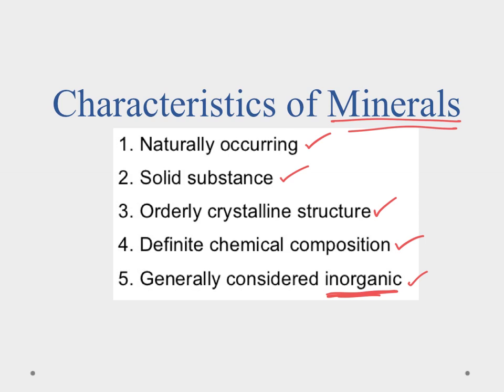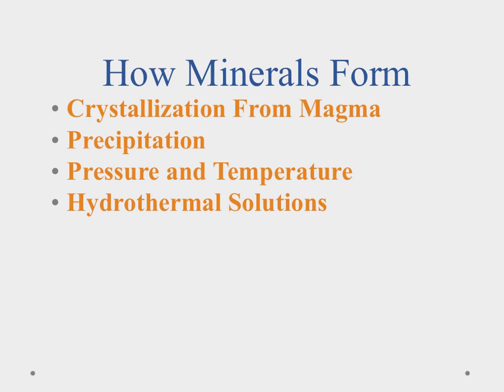For something to be a mineral it has to have all five of these characteristics. Now that we know what a mineral is, let's talk about how they form. Minerals form by four basic processes. The first is crystallization from magma. Magma is molten rock, and as it cools these minerals crystallize out. Depending on the composition of the magma and the rate of cooling, that determines what mineral we get.